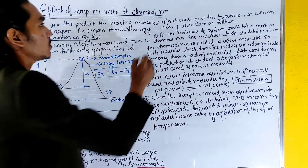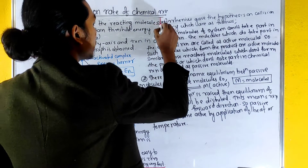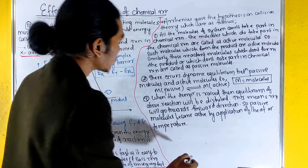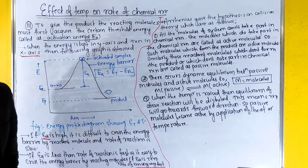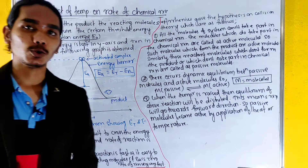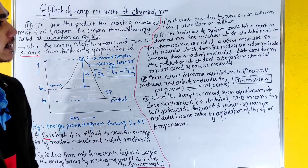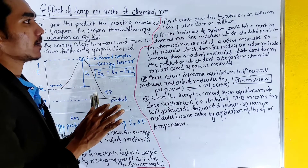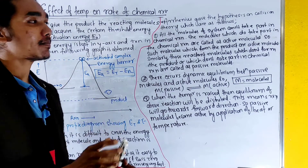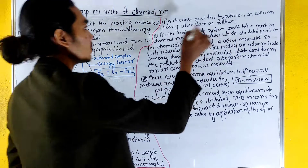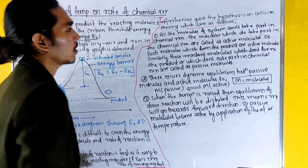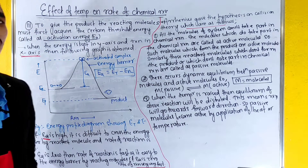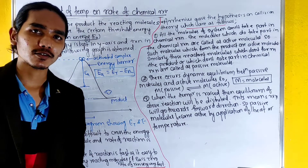The scientist Arrhenius gave a hypothesis on the collision theory. The hypothesis states that molecules react according to certain conditions.